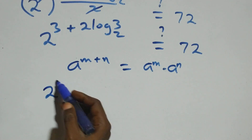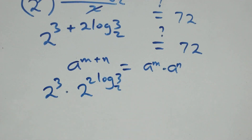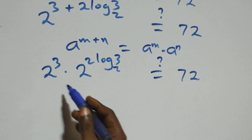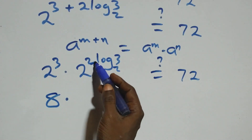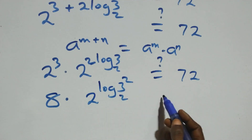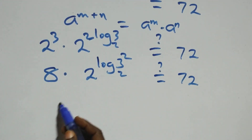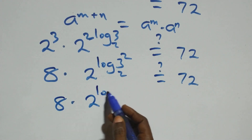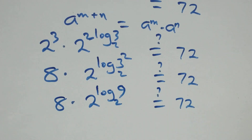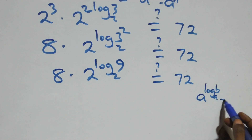This becomes 2 raised to power 3 times 2 raised to power 2 log 3 base 2, which equals 72 on this side. And 2 raised to power 3 is 8. Using the power-log identity, we have 2 raised to power log 3 squared base 2, which equals 9. So we have 8 times 9. Is it equal to 72? Following the rule: A raised to power log B to base A equals B.